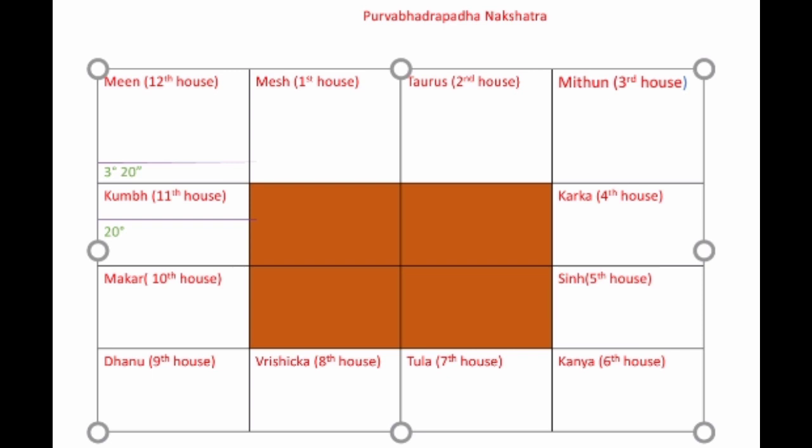Purvabhadrapada nakshatra partly falls in the Kumbh rashi — a major portion lies in Kumbh rashi, and a very small portion, the last pada, lies in the Min rashi. Kumbh rashi is owned by Shani or Saturn, and Min rashi is owned by Jupiter. Jupiter is also the ruling graha of Purvabhadrapada nakshatra.